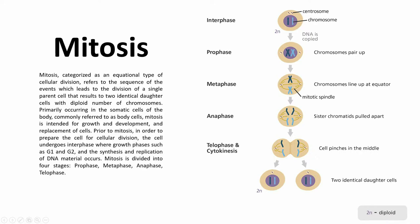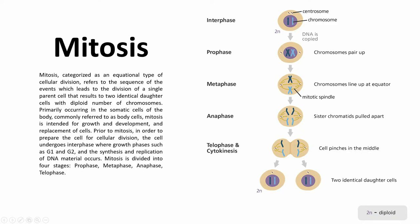Mitosis is divided into four stages: prophase, metaphase, anaphase, and telophase. Let us now tackle the first stage of mitosis, which is prophase.